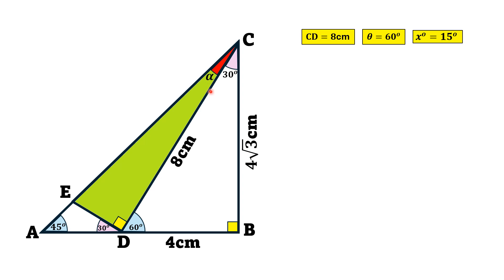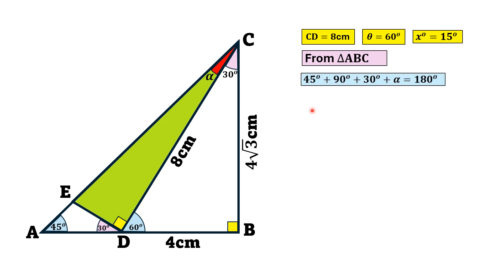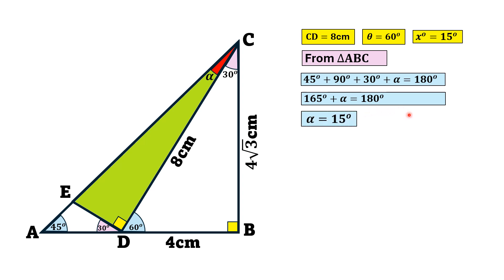Now considering triangle ABC, let the angle ACD be alpha. We know that angle ABC is a right angle, and the sum of interior angles is 180 degrees. So 45 + 90 + 30 + alpha = 180 degrees, giving us alpha = 15 degrees.